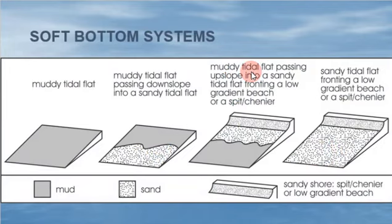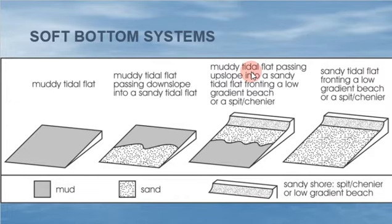Looking at the soft bottom systems now — we talked about the rocky shore, and now we're going to see what happens in these other places that are either muddy or sandy. Notice how flat the regions are. We have a muddy tidal flat passing down slope into a sandy tidal flat — muddy down to the bottom, sandy at top, and then all sand, which is probably what most of us are most familiar with. And if you've been to the Texas coast, on one side you have the sandy beach, but in the bay area it's usually muddy because the water's more still there.